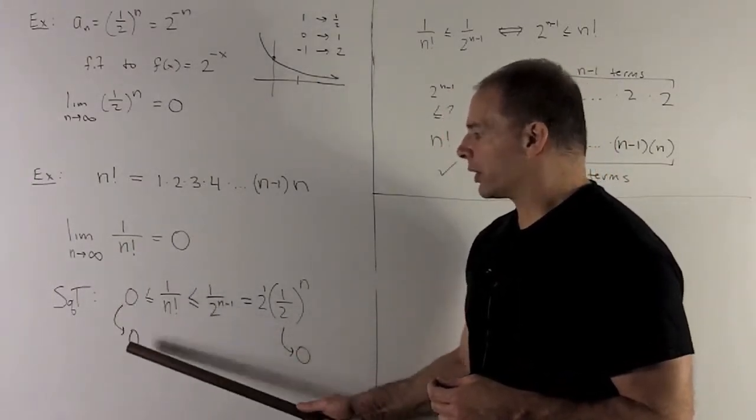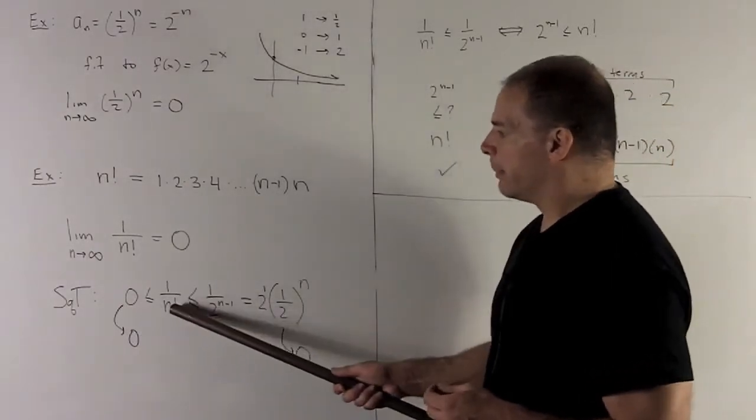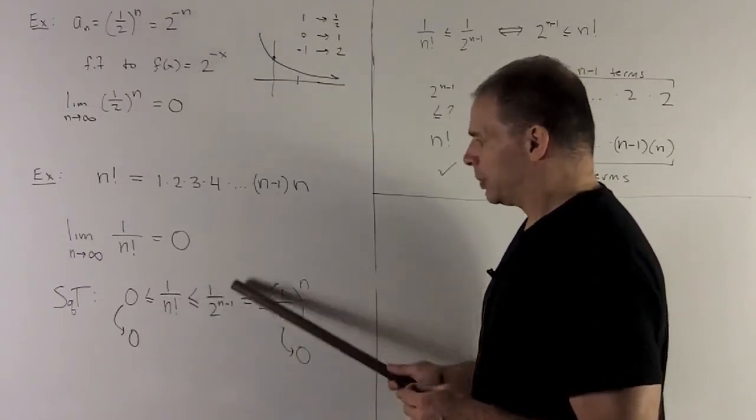On our a_n, we're going to 0. On our b_n here, we're also going to 0. So the thing in the middle has to go to 0. So let's see how we get this piece in the middle.